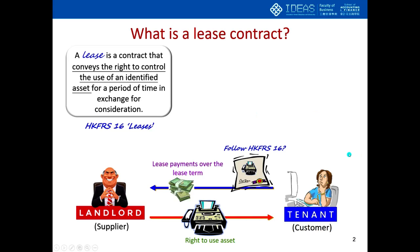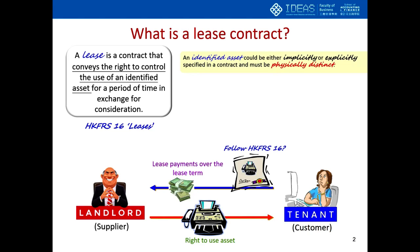We need to look closely at two issues in the definition. The first issue relates to the term 'identified asset.' An identified asset could be either implicitly or explicitly specified in the contract, and it must be physically distinct. The standard gives two examples of assets that are not physically distinct: a portion of an asset, such as 60% of a pipeline's capacity, is not physically distinct; and the right to use any of 20 fibre-optic cables is not physically distinct either.